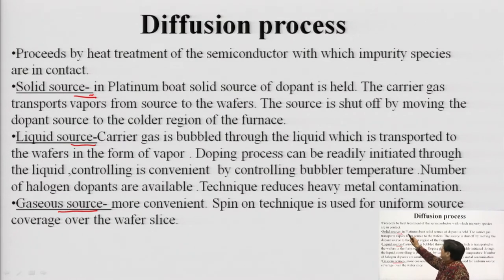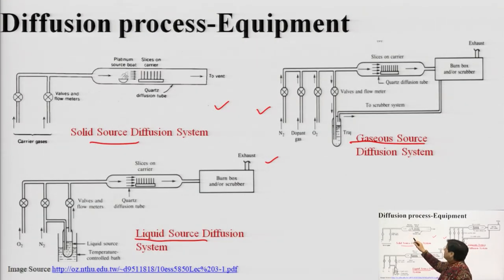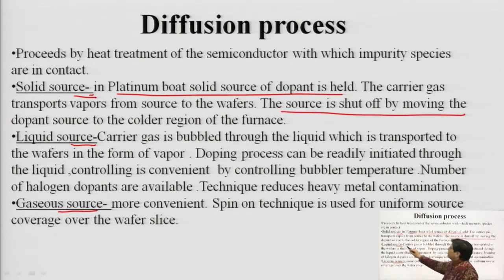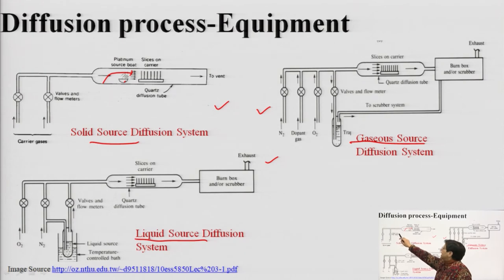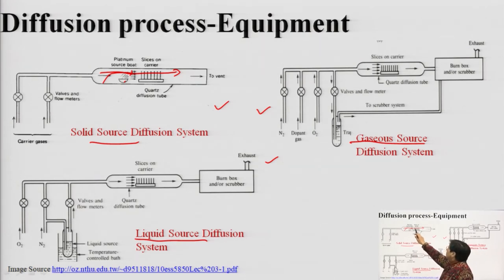In the case of a solid source, you use a platinum boat where the solid source is held. The source is then shut off by moving the dopant source to the colder region of the furnace. The source is converted into vapors, which are then purged and made to flow over the wafers along with an inert carrier gas. The carrier gas ensures uniform flow of dopant species onto the wafers. This is a quartz wafer diffusion tube, and the leftover gas species are brought out through the vent.